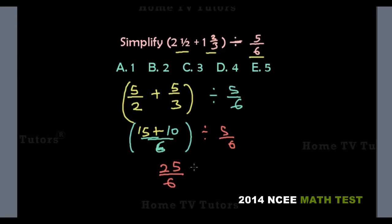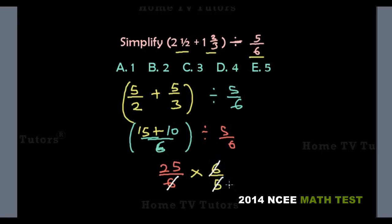Now we remove the brackets. We have 25 over 6, and the division sign means we convert to multiplication, making the denominator 6 become the numerator and the numerator 5 become the denominator. So 6 cancels with 6, and 5 into 25 gives us 5. The answer is 5, so the answer option E is the right answer.